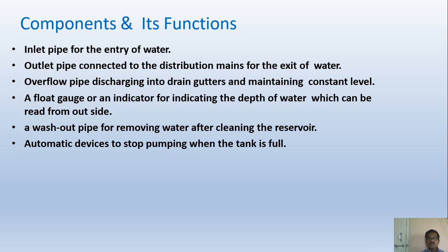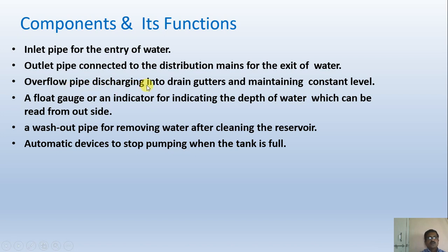The components and functions of a water distribution reservoir include: an inlet pipe for the entry of water, an outlet pipe connected to the distribution mains for the exit of water, an overflow pipe discharging into drain gutters to maintain a constant level, a float gauge or indicator for indicating the depth of water readable from outside, a washout pipe for removing water after cleaning the reservoir, and automatic devices to stop pumping when the tank is full.